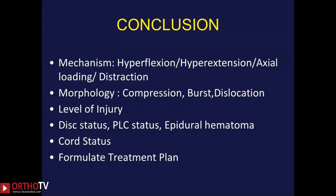To conclude, from imaging we should try to decipher the mechanism of injury — whether it is a flexion injury, hyperextension injury, axial loading, or flexion distraction injury. Look at the morphology — compression, burst, or dislocation; the level of injury; the status of the disc and PLC; any epidural hematoma; and the status of the cord. All of this imaging should help to formulate the treatment plan for the patient.